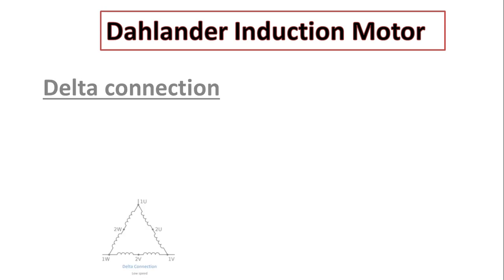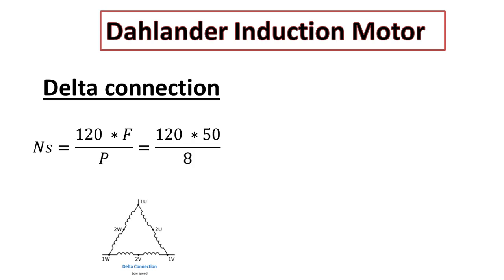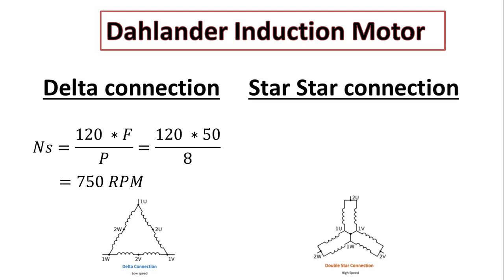So in case of delta connection, as you can see, we will connect the power supply to 1U, 1V, 1W. Here we will get eight poles. So inside this formula we will find that the synchronous speed will equal to 750 RPM. But in case of double star connection, we will only get four poles.